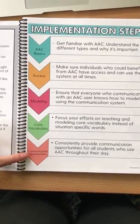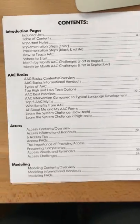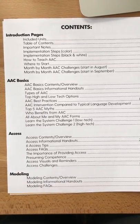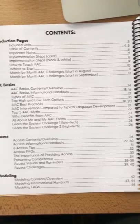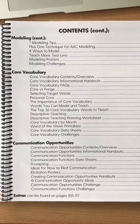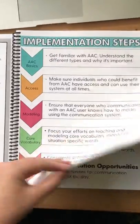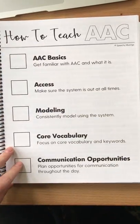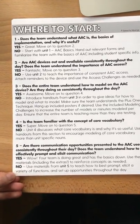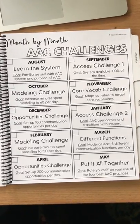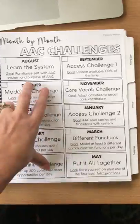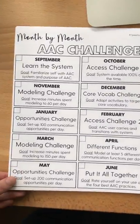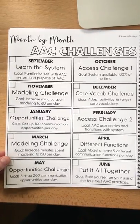These five chapters go in order through the book and I'll show you the table of contents with examples of what's included in each section. I also include forms so staff can check or stamp each section as they work through it. I provide information on where to start and even month-by-month AAC challenges. There's one starting in August and one in September, and the editable forms let you customize everything for your school and staff.